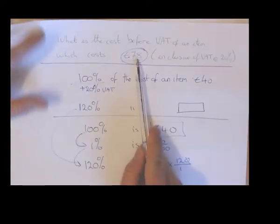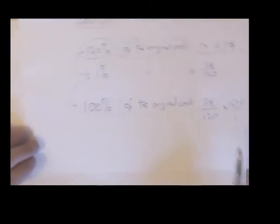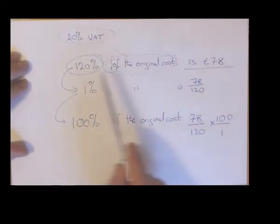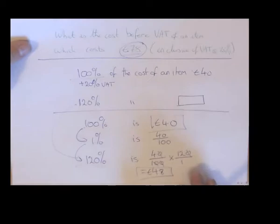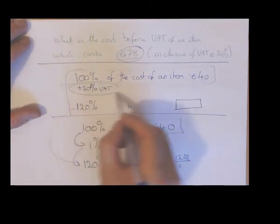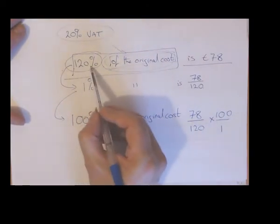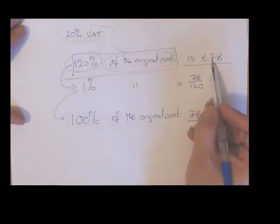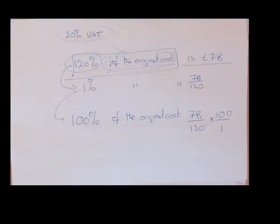The 78 euro is what the item costs inclusive of VAT — that's what you have when you include it. So: an item costs 40 euro, we add 20% VAT to give us 120% of the cost of the original item. When we've added VAT, we know that 120% of the original cost is what we have now — the 78 euro. We use the unitary method to find out what the original cost is. Just stick it into your calculator and you'll get your answer — and that's what you do.